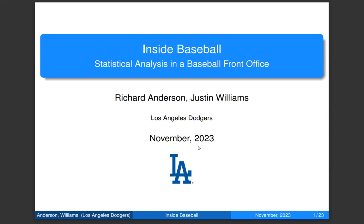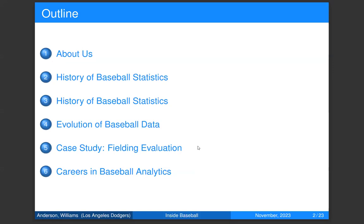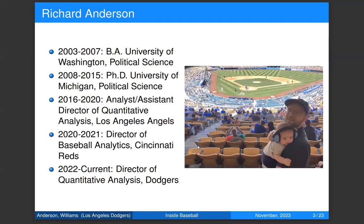I'm Richard. Today we're going to do one section on the history of baseball statistics. We'll start with introductions, talk about how statistics have been used in baseball — it's an interesting story of hobbyist weirdos who got into it — and there's some academic history to it. We'll talk about how statistics have evolved with the explosion of new data sources, and Justin will go through a case study on evaluating defense in baseball. My background: I got my bachelor's at University of Washington in political science.